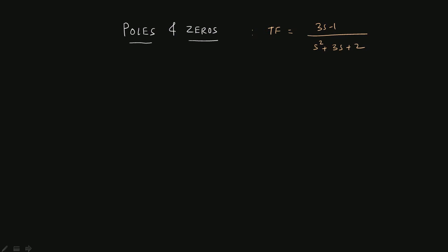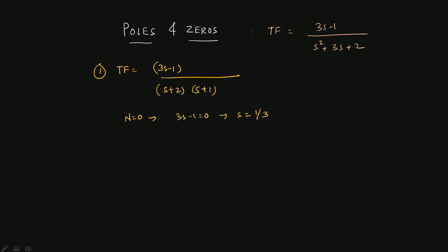Let's solve the question step by step. The first step is to represent the transfer function in factored form. The numerator 3s minus 1 stays as a single bracket. The denominator s² + 3s + 2 factors as (s + 2)(s + 1). Setting the numerator equal to zero gives 3s - 1 = 0, so s = 1/3. Setting the denominator equal to zero gives s = -2 and s = -1. Therefore, the zero is at 1/3, pole 1 is at -2, and pole 2 is at -1.